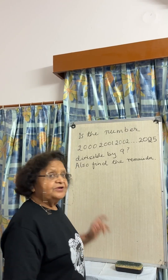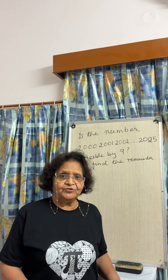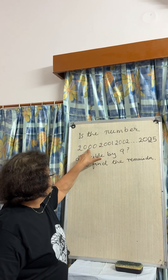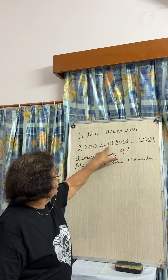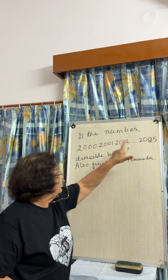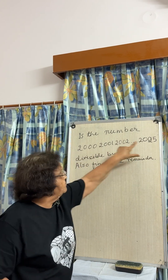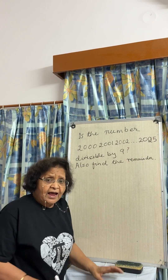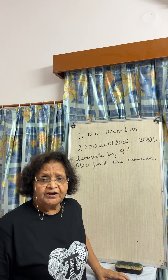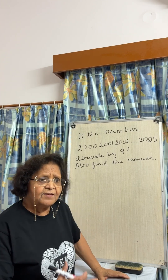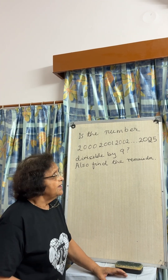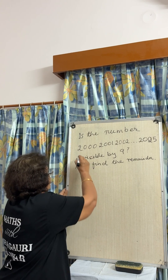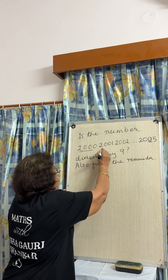A very interesting question: is the number 2000 2001 up to 2025 divisible by 9? The divisibility test for 9 states that the sum of the digits must be divisible by 9. So let us find the sum of the digits.